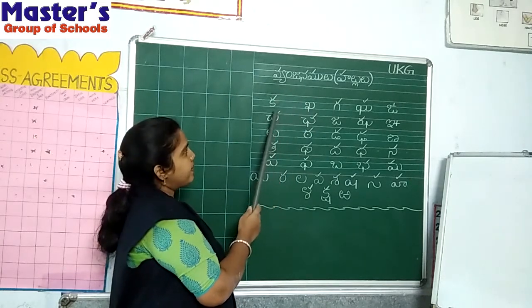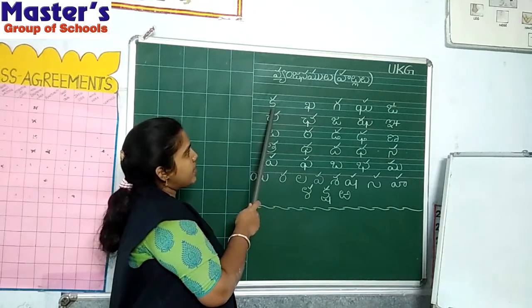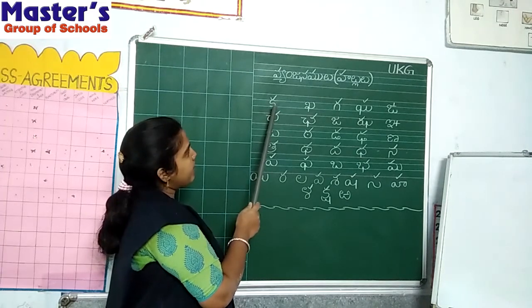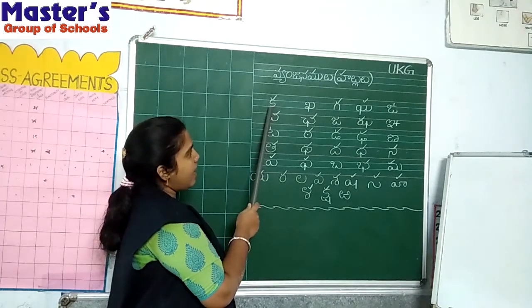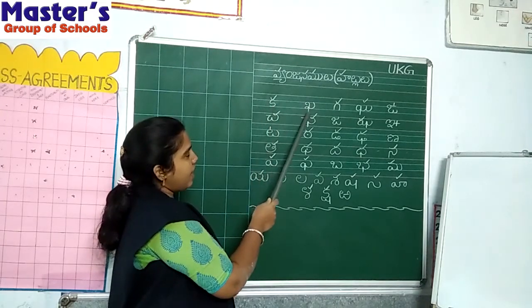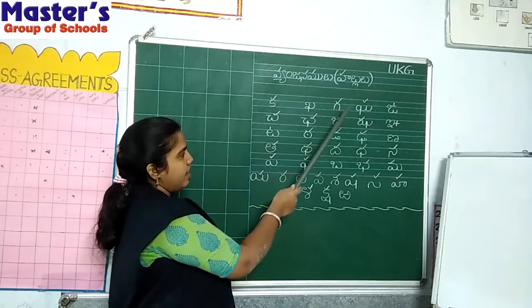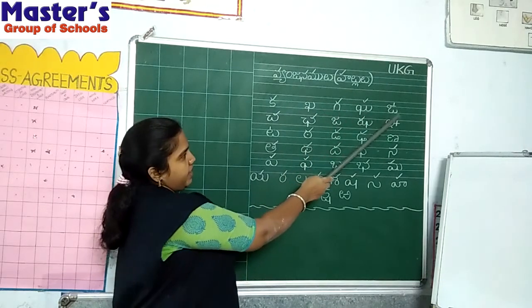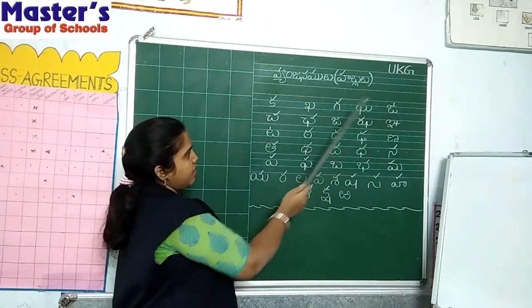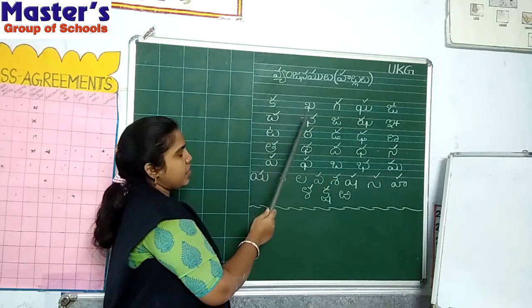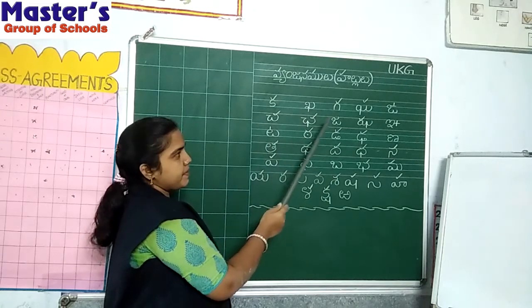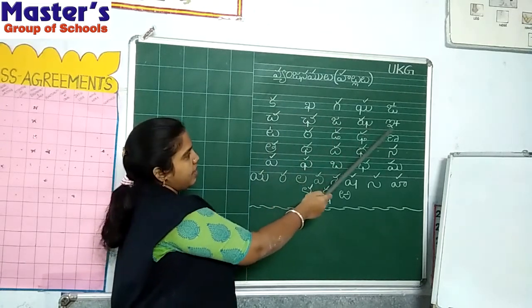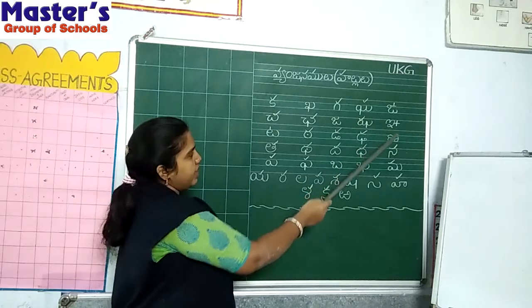Now say after me: Ka, Kha, Ga, Gha, Nyha, Cha, Cha, Ja, Ja, Ini.